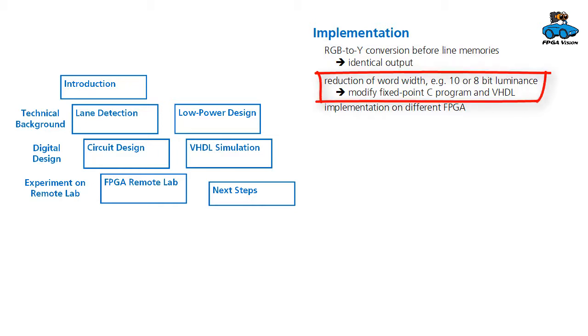Another optimization would be to reduce the word width, for example to 10 or 8-bit for the luminance data. If you do this, you have to modify the C program and of course the VHDL. Or you can implement the architecture on a different FPGA.